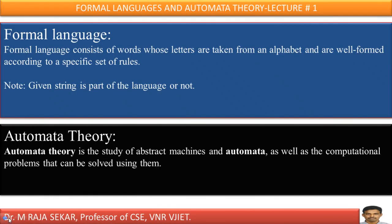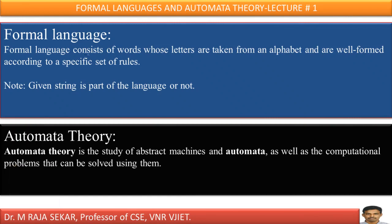Now we will try to understand what is a formal language. A formal language consists of words whose letters are taken from an alphabet, and are well-formed according to a specific set of rules. By using this set of rules, we can say whether a particular word or string is part of that language or not. These languages are known as formal languages.